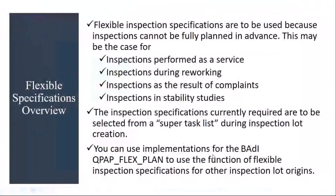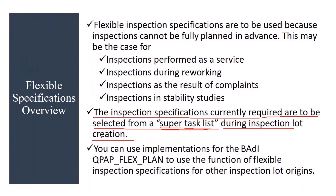The inspection specifications currently required are to be selected from a super task list during inspection lot creation. Basically, you select the required MICs from the task list. In QM, the task list is called a super task list because it will have all the MICs. It is also sometimes called a universal plan. To use this flexible specifications functionality, you need to implement a BAdI in the system, which I will show you. You can use implementations for this BAdI to use the function of flexible inspection specifications for the inspection lot.